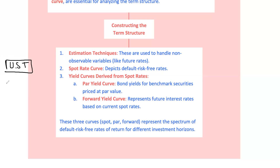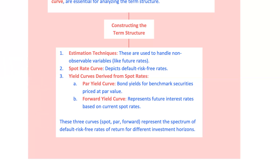Imagine the US Treasury issuing a 10-year zero-coupon bond at a 3% spot rate, while a 2-year bond yields 1.5%. The 10-year rate reflects the compensation investors demand for locking in their money for a longer period, considering inflation and economic risks. Constructing yield curves is a bit like putting together a puzzle where each piece represents different maturities and interest rates. The spot rate curve is derived from default risk-free zero-coupon bonds across all maturities — think of it as the baseline from which we derive other rates.